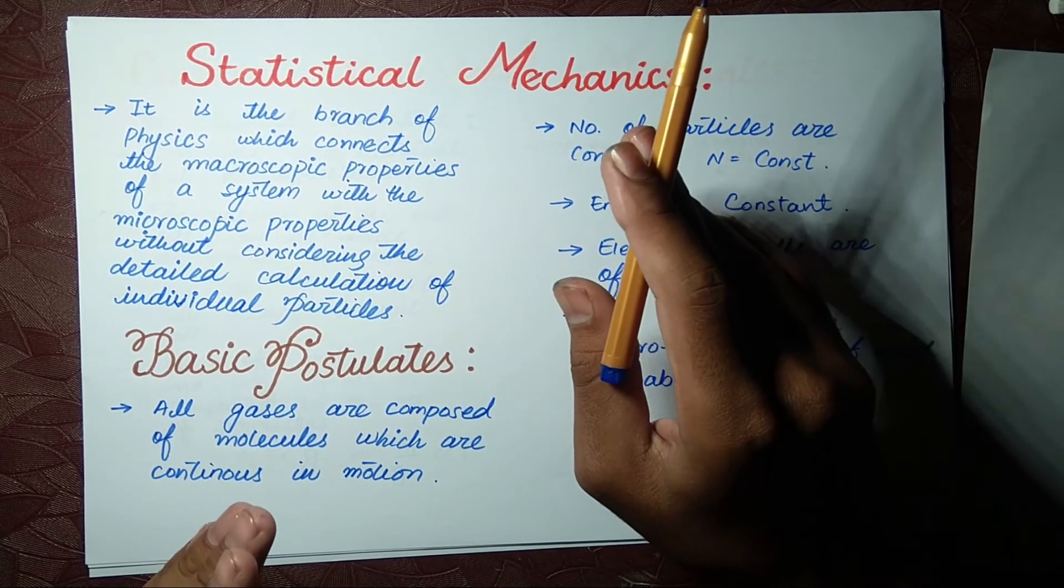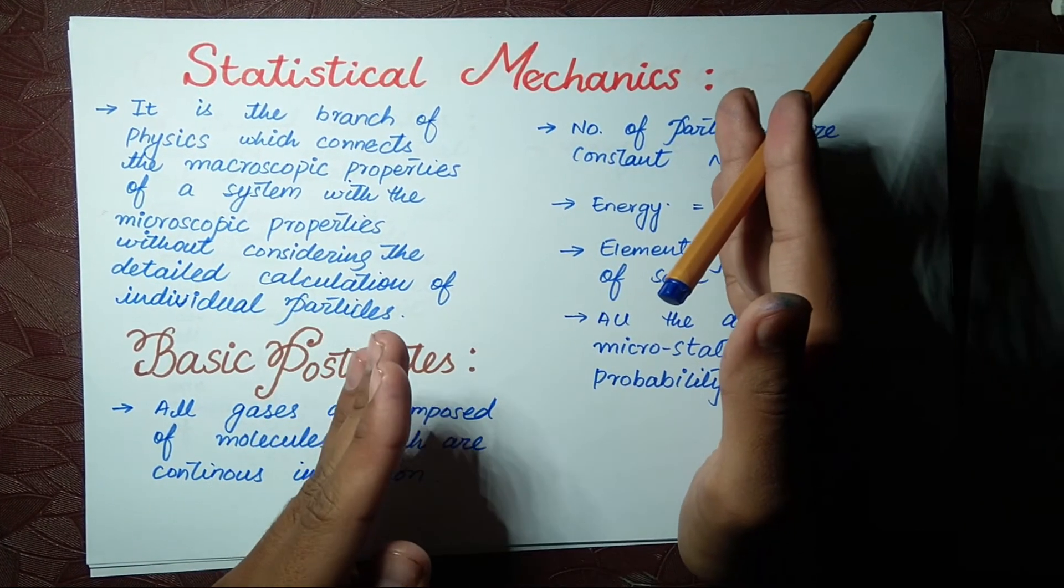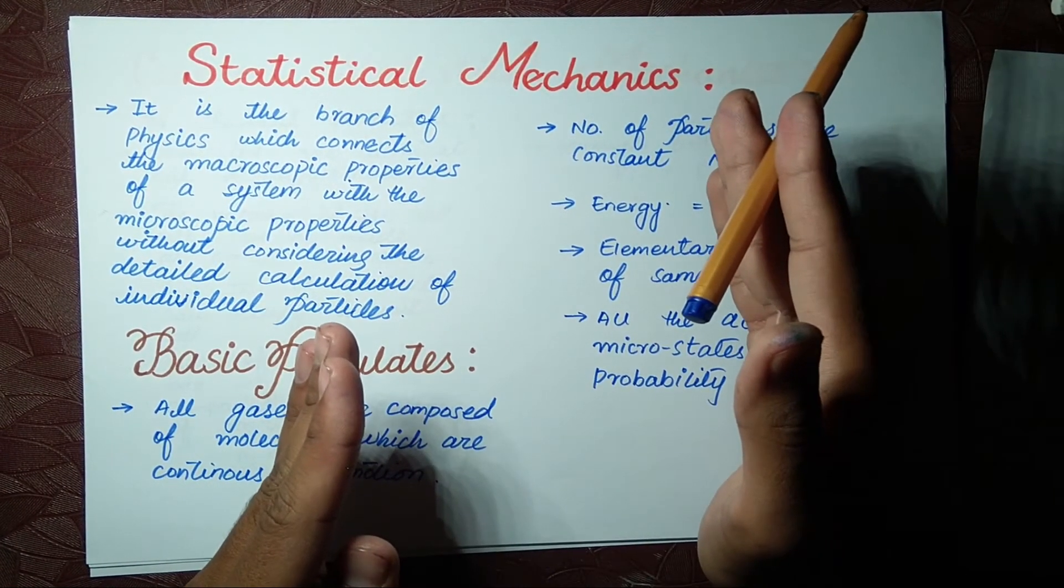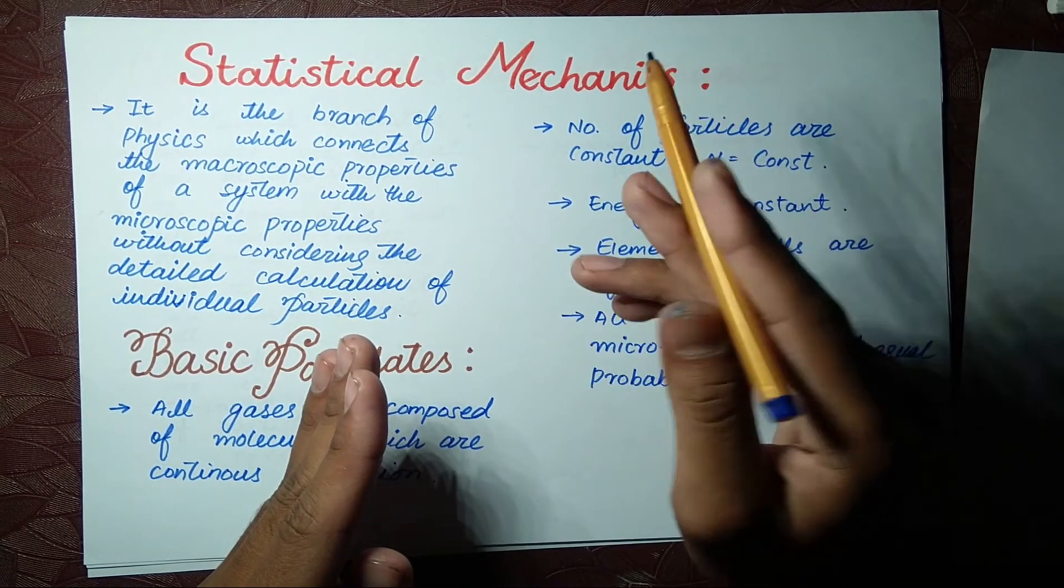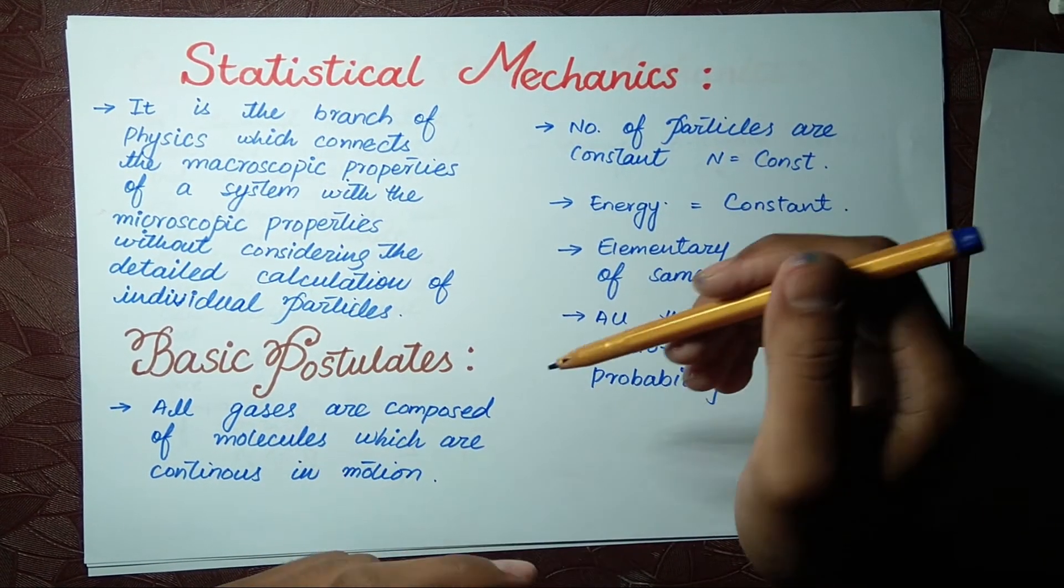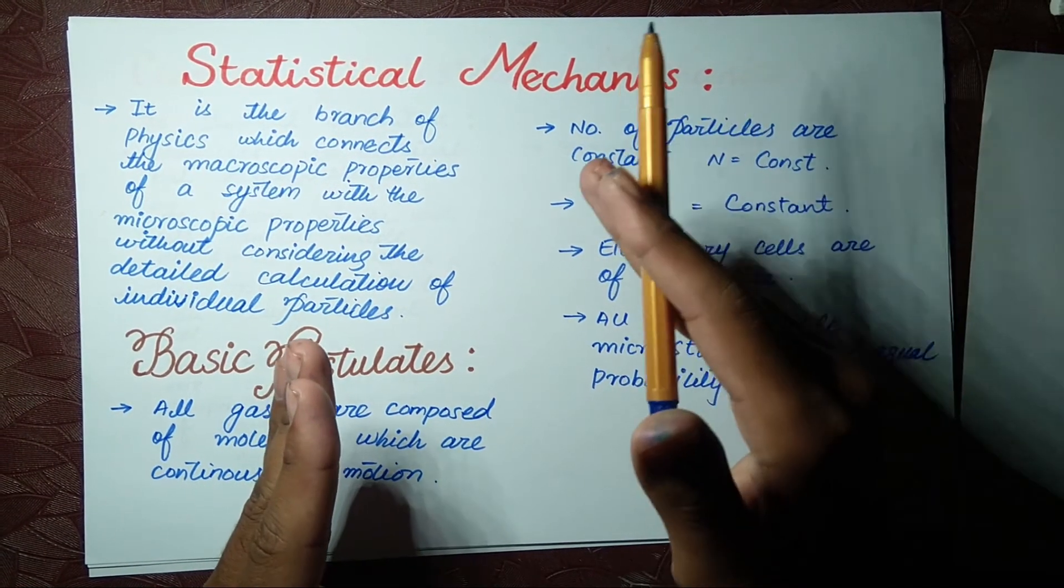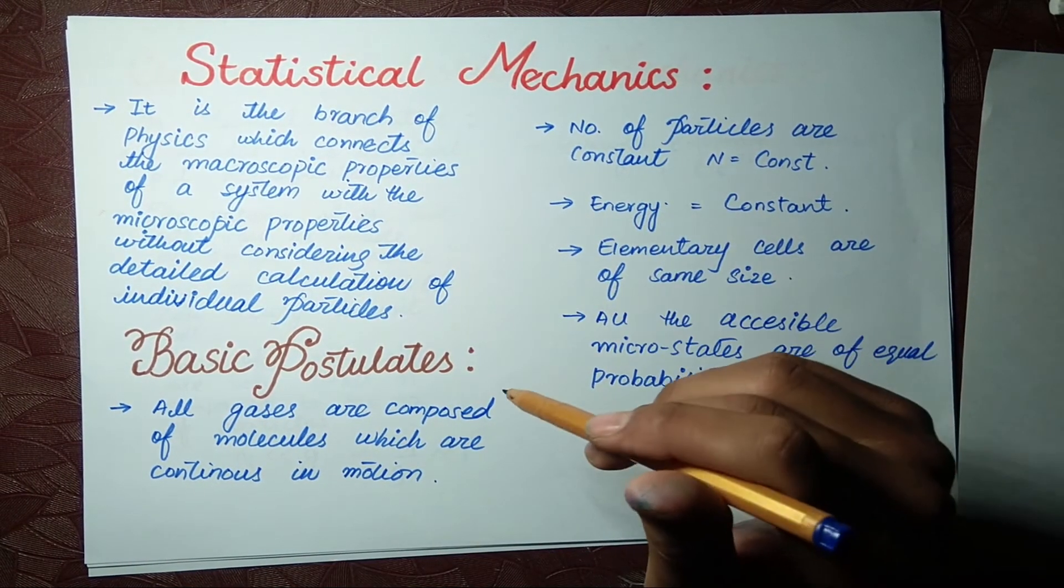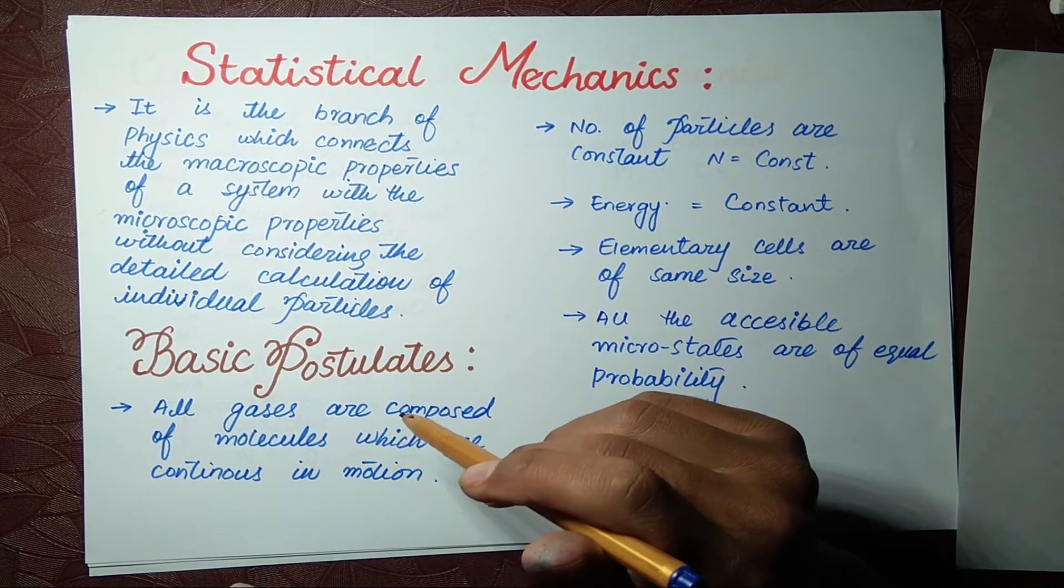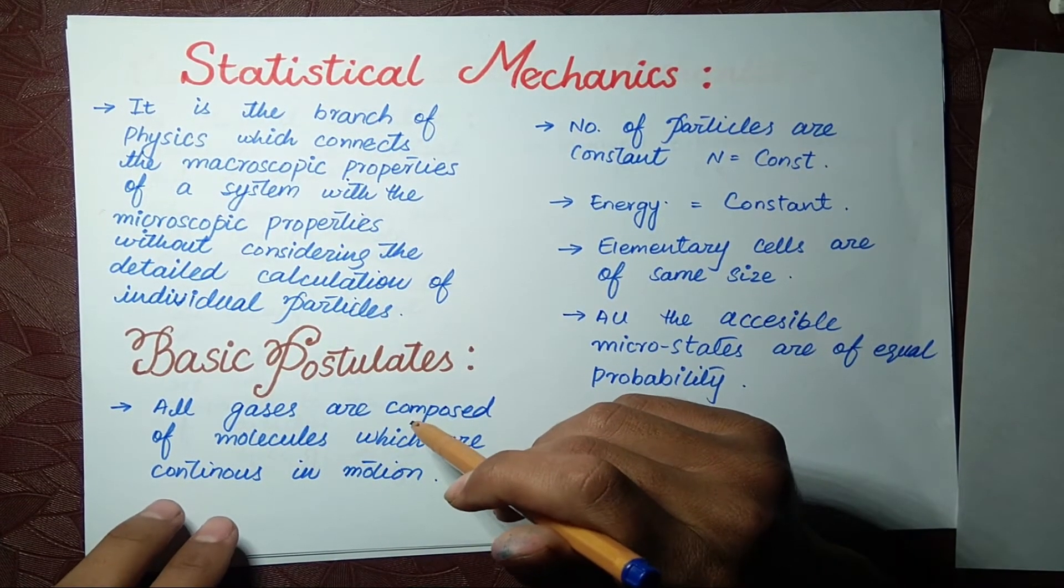If we have 10 molecules, for example, in a container or in a system, we will study four of them or two of them, and we can assume a whole relation or answer for the whole system.